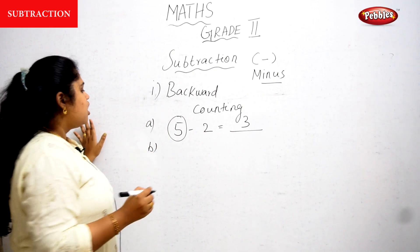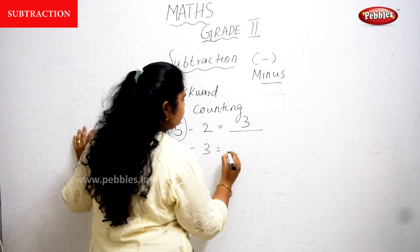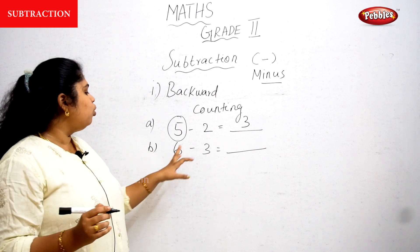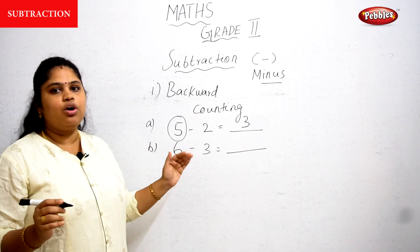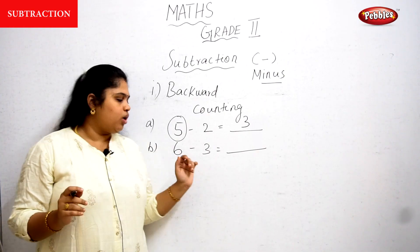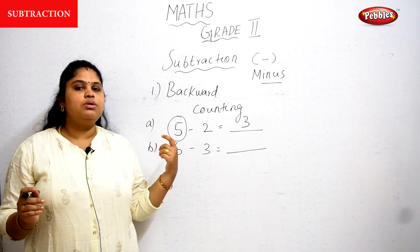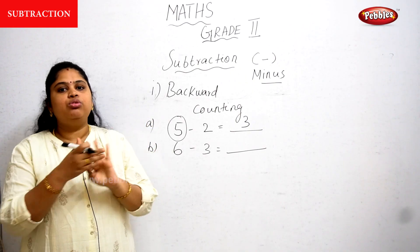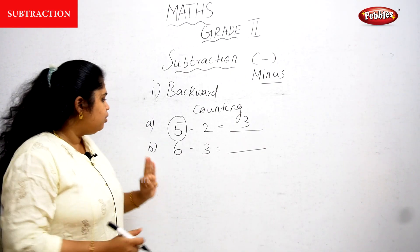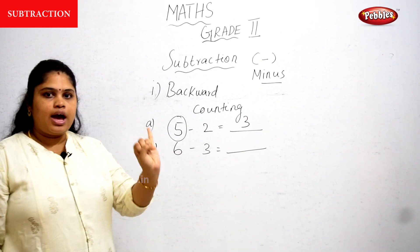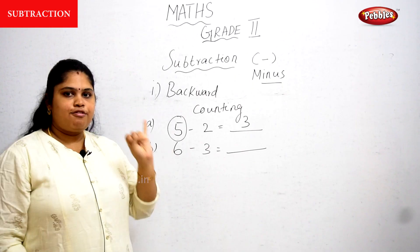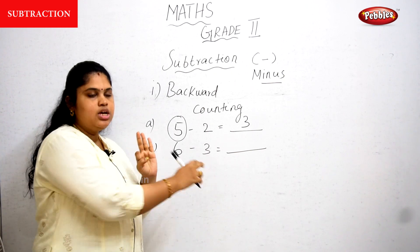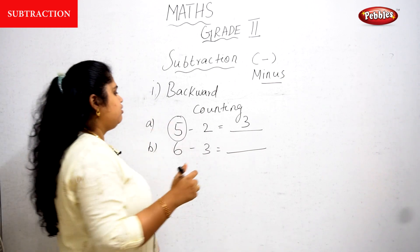Next question: 6 minus 3 equals dash. From 6 start the backward counting: 5, 4, 3. I stopped at 3 because I reached that number. How many fingers did I count? Three fingers. So the answer is 3.